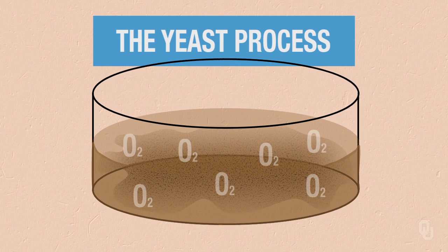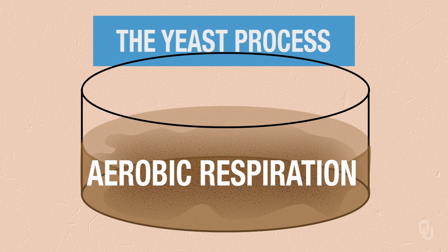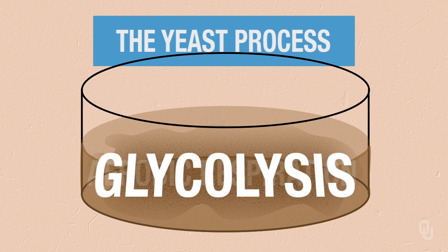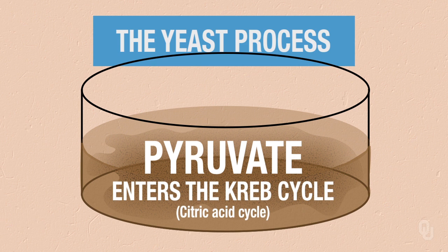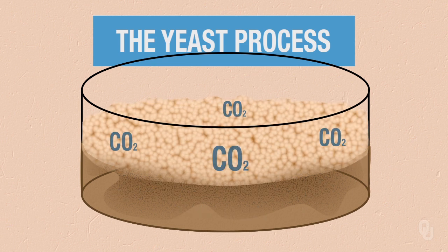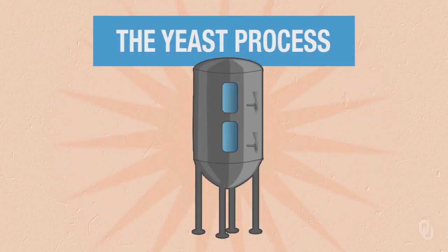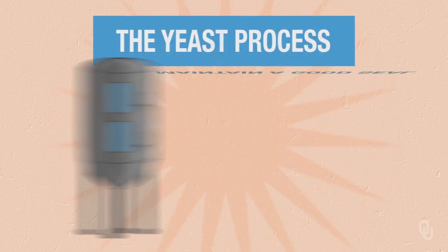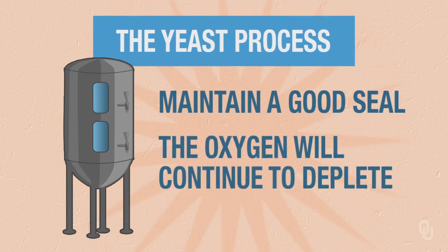The first thing we want our yeast to do is to multiply — they've got a lot of work to do. We've got lots of sugar that we want to convert into ethanol. The first thing the yeast will do is use the oxygen still in the wort and go through normal aerobic respiration, going from glycolysis to create pyruvate, and then the pyruvate will go into the Krebs cycle. This process creates CO2, which goes into our vessel, and as long as we've sealed it off so no oxygen can get back in, we're actually depleting all of the oxygen.